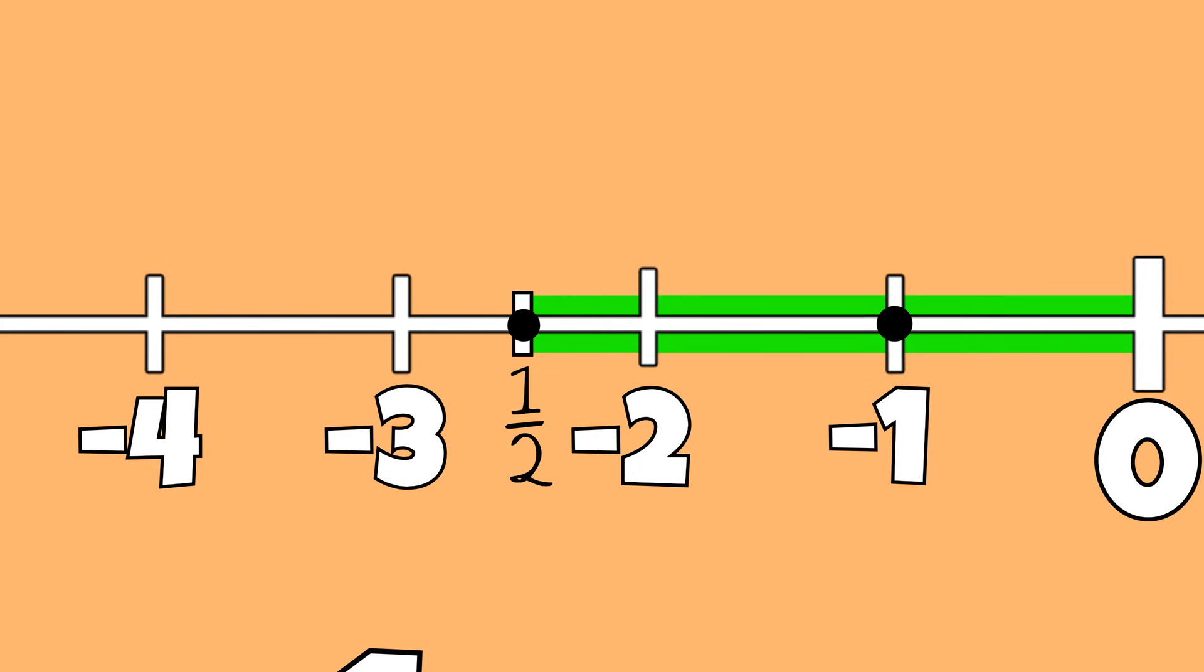Since I have two wholes and my number is negative, I moved two units to the left of 0 and an additional one half that represents the 5 tenths.